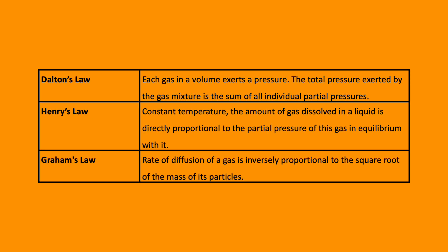The final three laws. Dalton's law: the total pressure exerted by a gas mixture is the sum of each individual partial pressure. Henry's law: for constant temperature, the amount of gas dissolved in the liquid is directly proportional to the partial pressure of this gas in equilibrium with it. And finally, Graham's law: the rate of diffusion of a gas is inversely proportional to the square root of the mass of its particles.